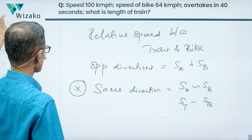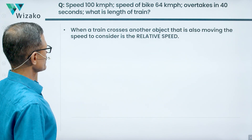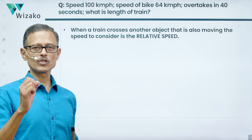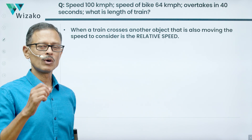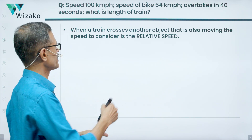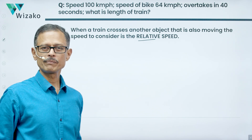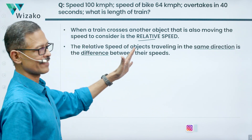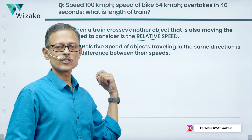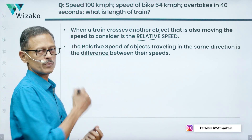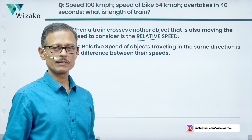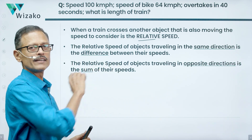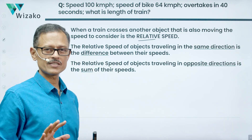Quick recap of what we've learned: when a train crosses a moving object, use relative speed instead of just the train's speed. Same direction → relative speed is the difference of speeds. Opposite directions → relative speed is the sum of speeds.